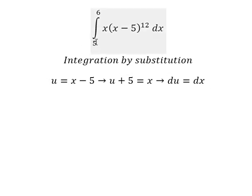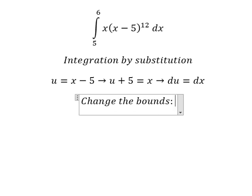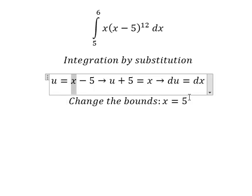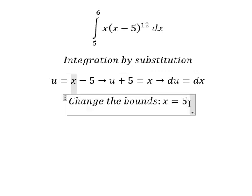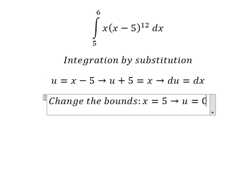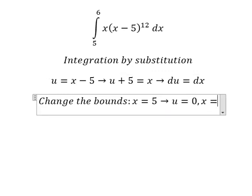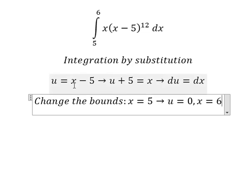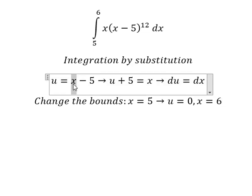Next, we need to change the bounds. When x equals 5, we substitute to get 5 minus 5, which equals 0. When x equals 6, we substitute to get 6 minus 5, which equals 1.